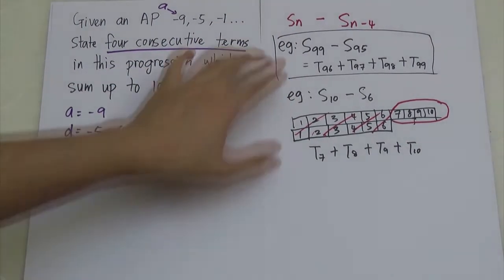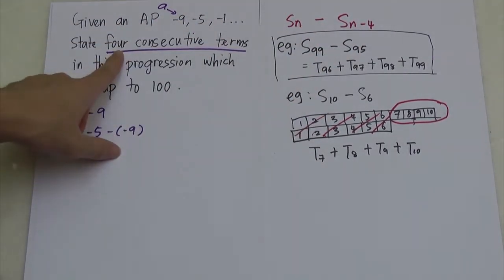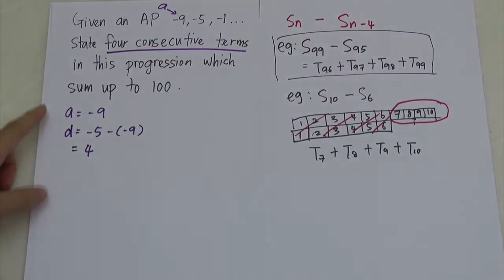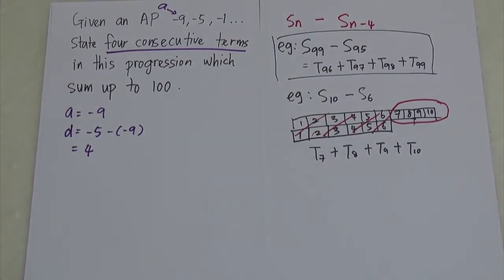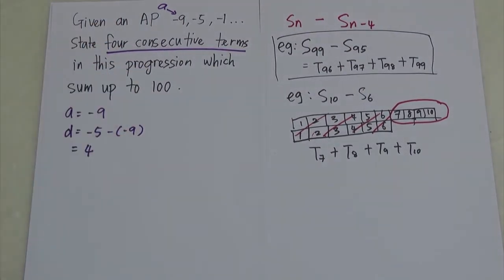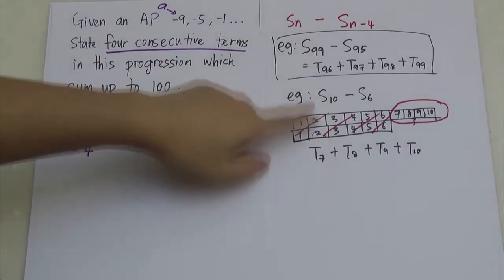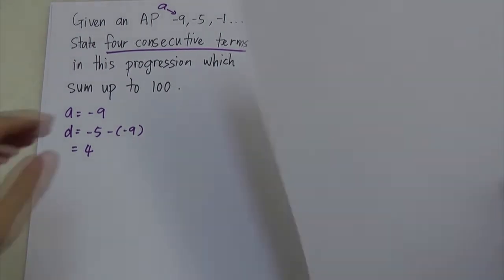So the method is: you use Sn minus S(n minus 4). Why N minus 4? Because the question wants 4 consecutive terms. If the question wants 5 consecutive terms, you use N minus 5. If it wants 10 consecutive terms, you use N minus 10. You must get some basic concept on how to solve this kind of question before moving on.